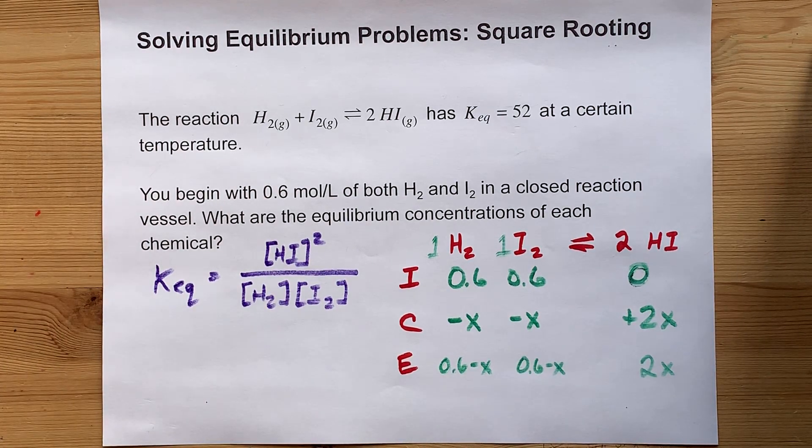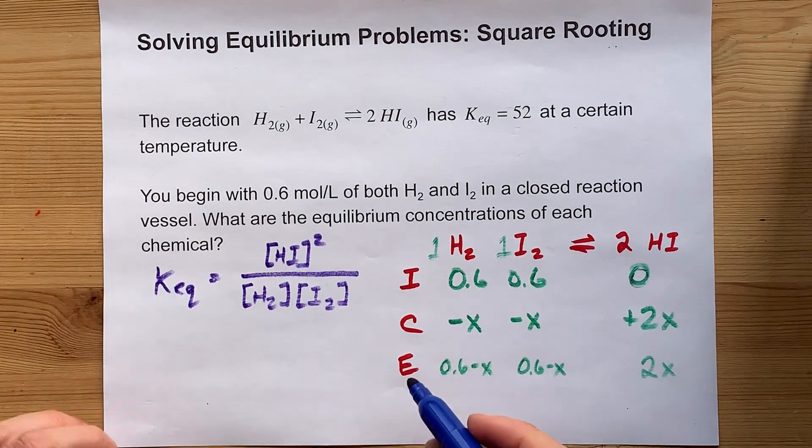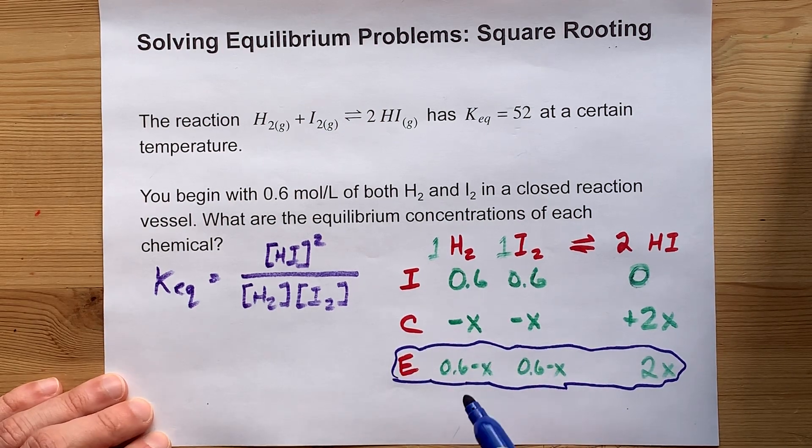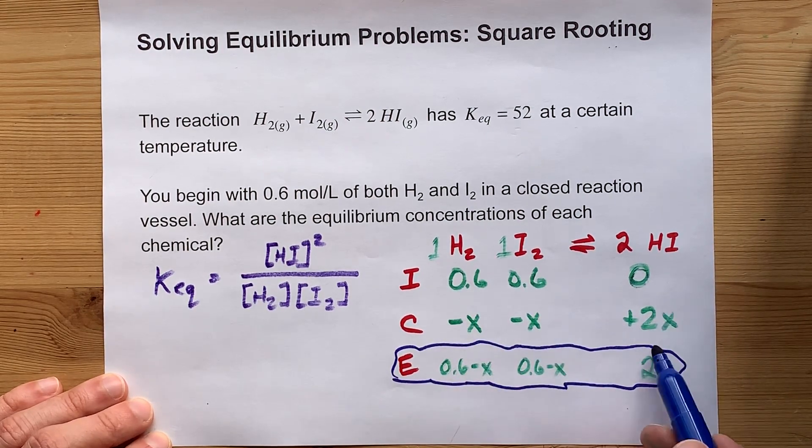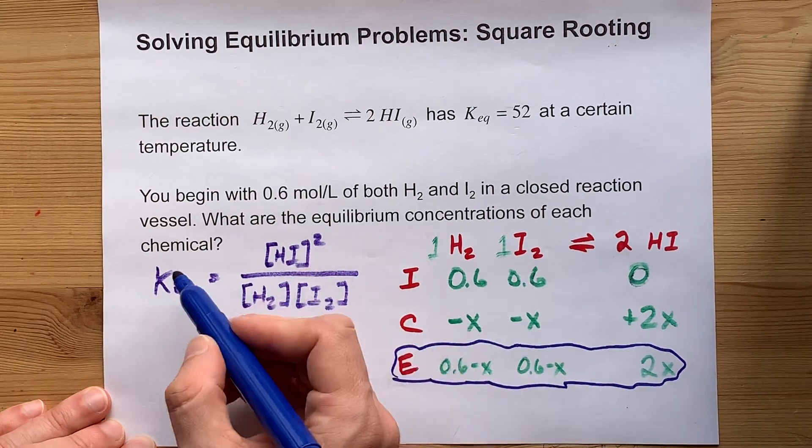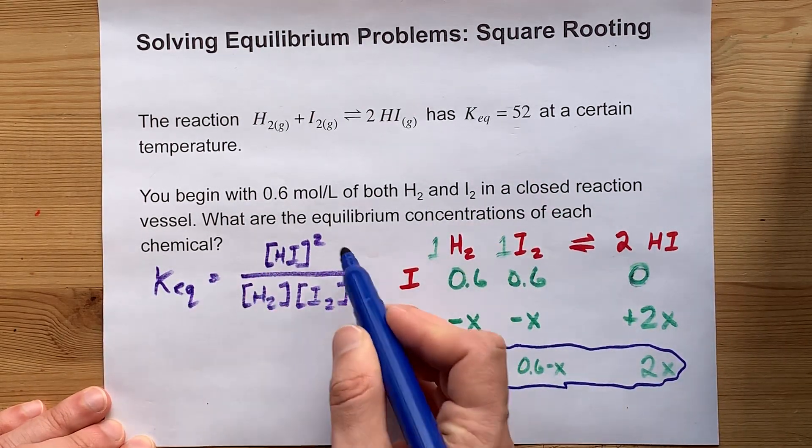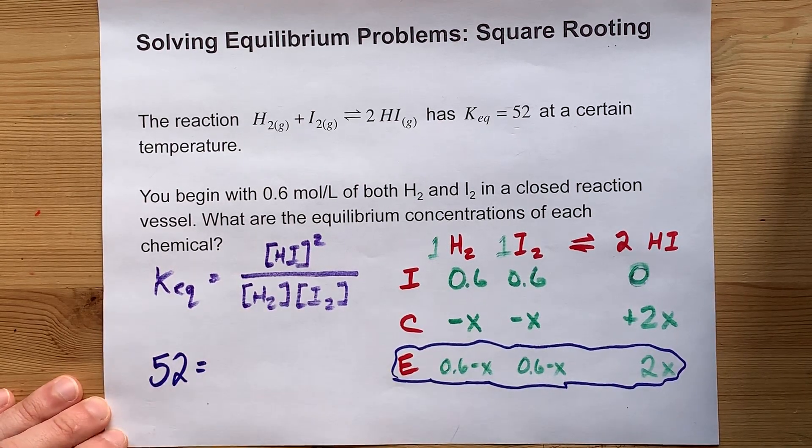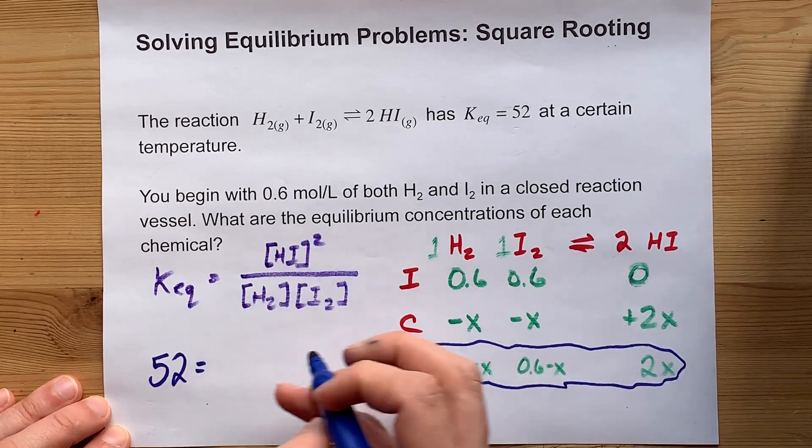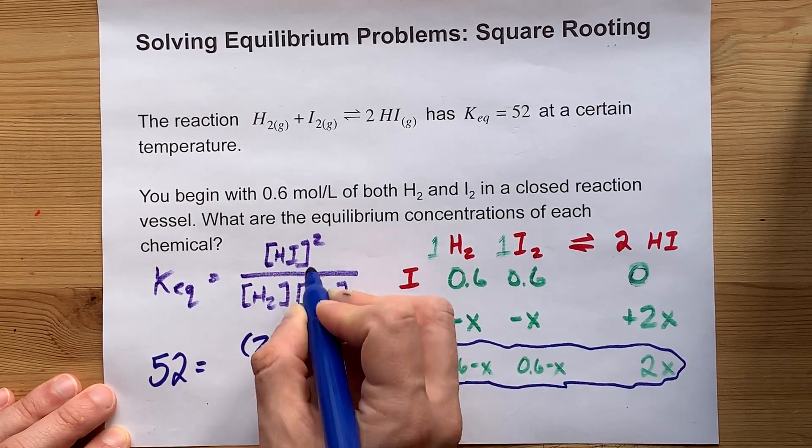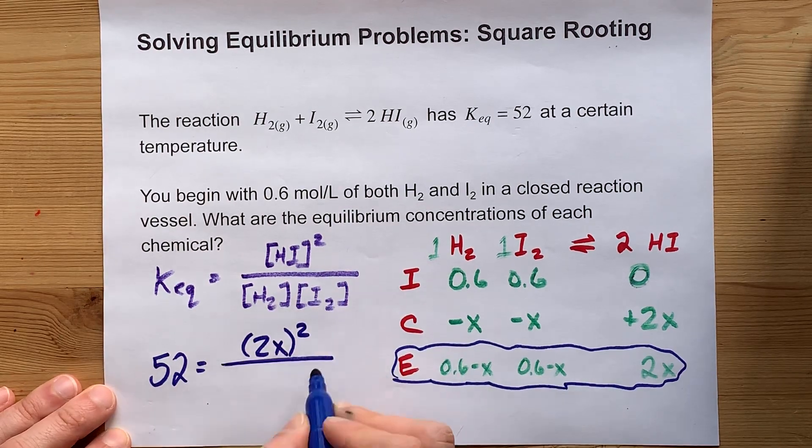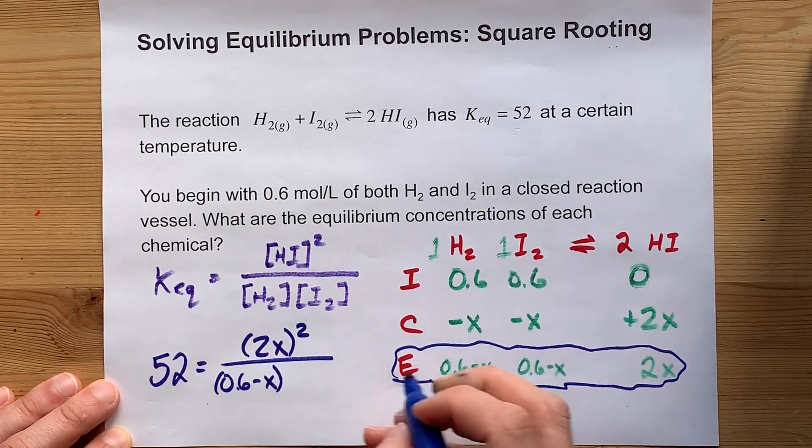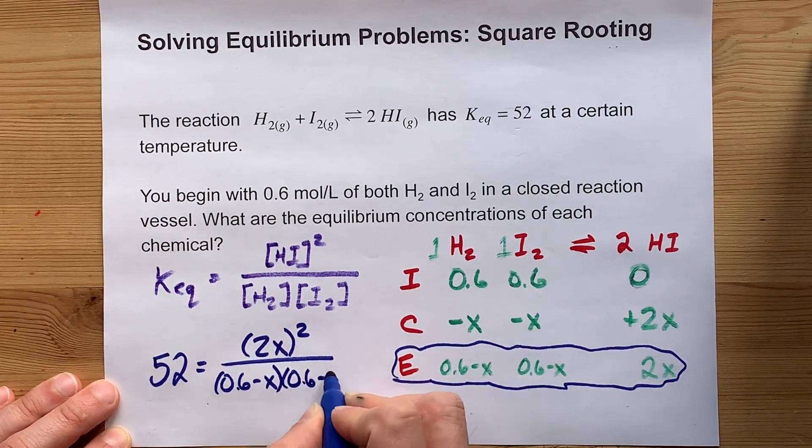Here's the important bit. When you plug all of these equilibrium concentrations, and I know that they have an X in it, but you're going to be solving for X to figure out how much was lost or gained, when you plug those in and plug a number in for KEQ, you're going to be able to solve for X. 52 is my KEQ. My equilibrium concentration of HI is 2X, but it is squared according to the equation. And on bottom, my concentration of H2 is 0.6 minus X, and my concentration of I2 is also 0.6 minus X.